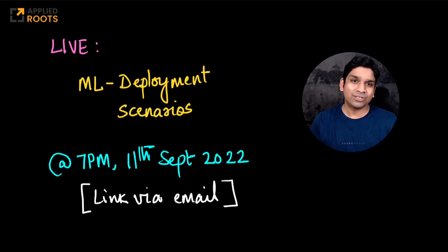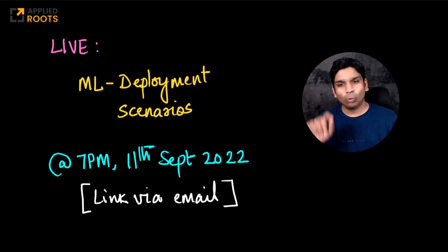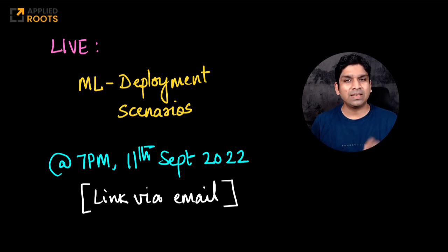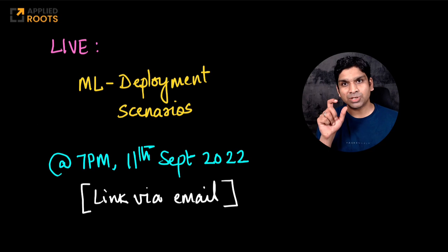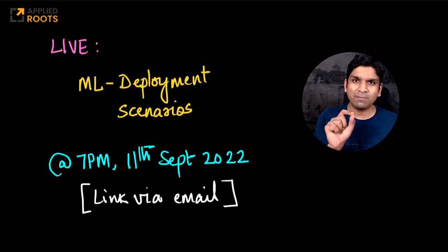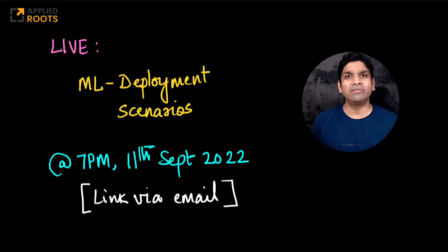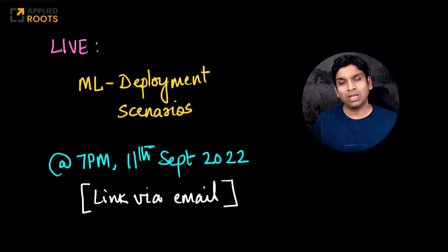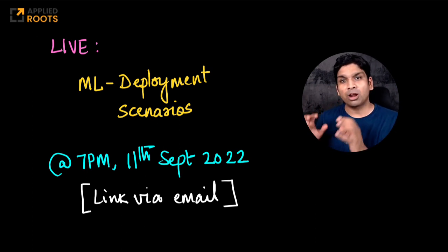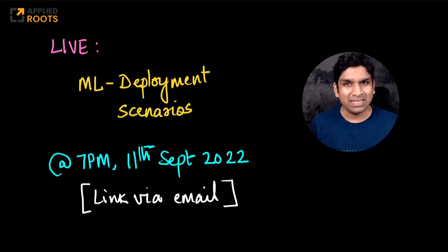Hi friends, our next live session for all of our AI enrolled students will be on the coming Sunday, the 11th of September at 7 p.m. This is a session that will happen in the evening between 7 p.m. and 9 p.m., and in this session we will discuss about various real world scenarios and what strategies we can employ to deploy and productionize machine learning and deep learning systems for these various scenarios.